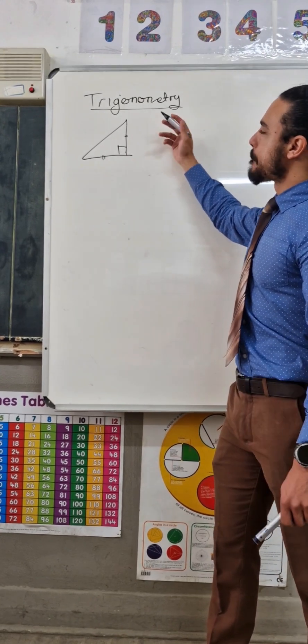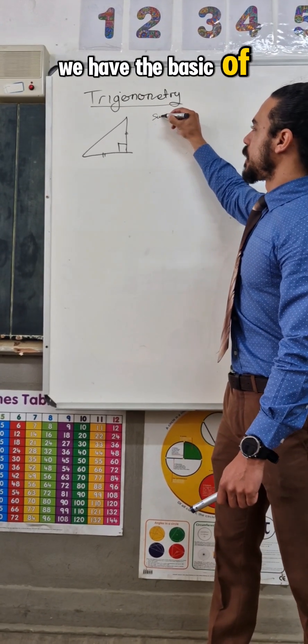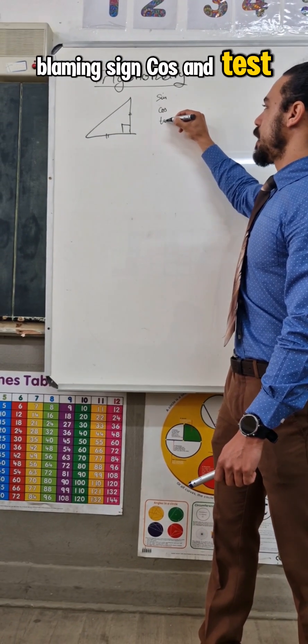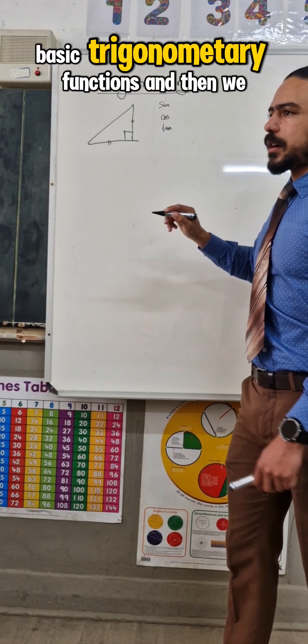And if we have the basics of trigonometry, that means sine, cosine, and tangent. We're sitting here.